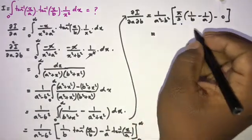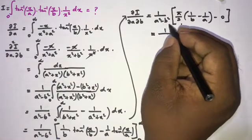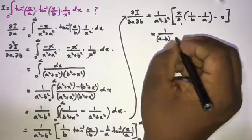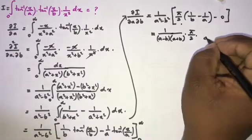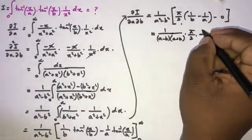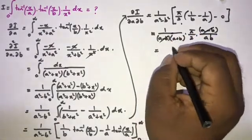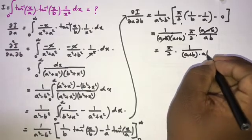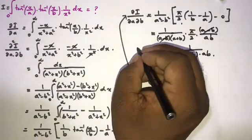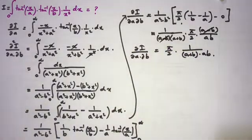Now a² − b² is a difference of two squares, so we write (a − b)(a + b). We have π/2 times [1/b − 1/a] divided by (a − b)(a + b). We can simplify: [1/b − 1/a] = (a − b)/(ab), and the (a − b) factors cancel. So the result is: ∂²I/∂a∂b = π/(2(a + b)ab).